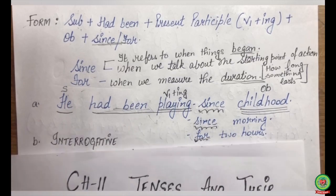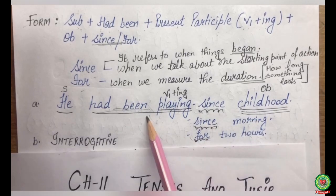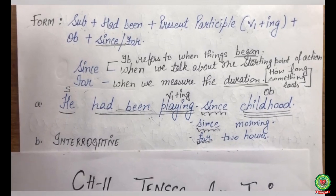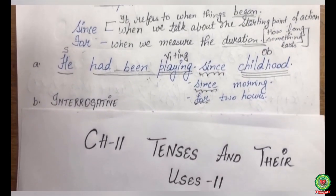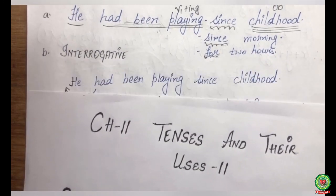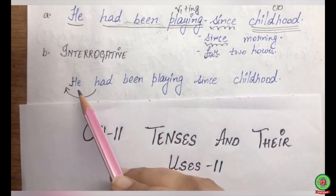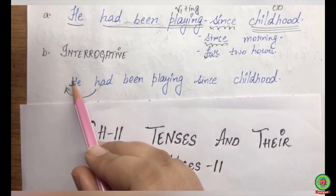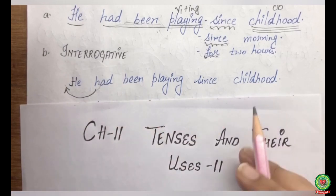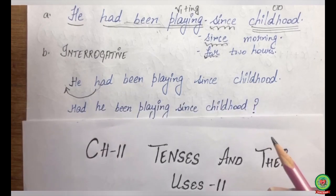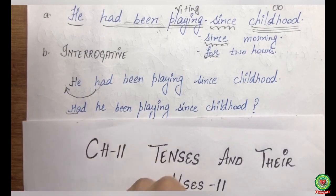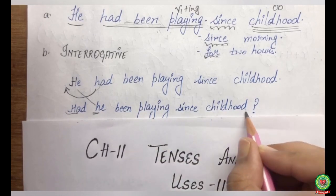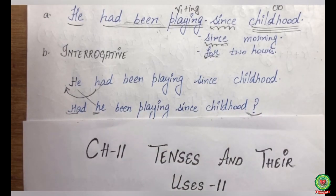Now, how to frame an interrogative sentence. This I have told in the previous session — you have to take out your helping verb outside. See the sentence: 'He had been playing since childhood.' Your 'had' will come out, 'he' will take the place of 'had,' and at last you write a question mark. 'Had' comes out with a capital letter, 'he' comes here in small letter, and at the end you write the question mark — as it is your interrogative sentence.